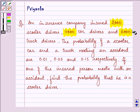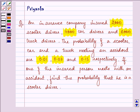The probability of a scooter, car and a truck meeting an accident are 0.01, 0.03 and 0.15 respectively. If one of the insured persons meets with an accident, we need to find the probability that he is a scooter driver.